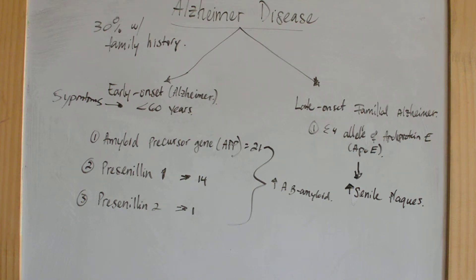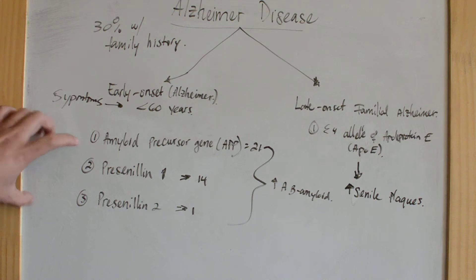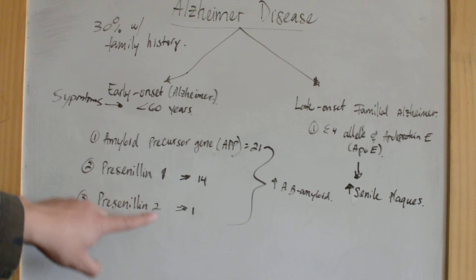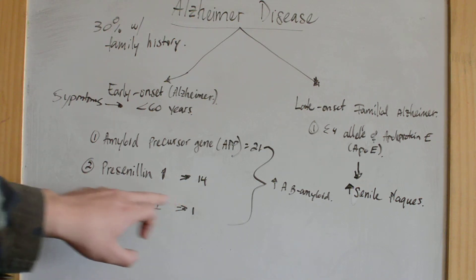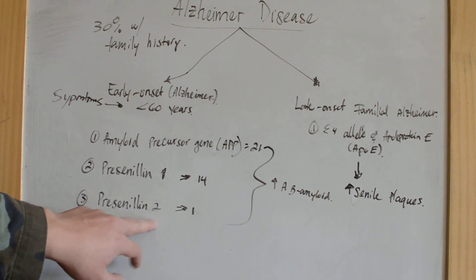There are three mutation sites associated with early onset familial Alzheimer's disease: the amyloid precursor protein gene (APP), presenilin 1 on chromosome 14, and presenilin 2 on chromosome 1.